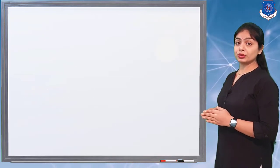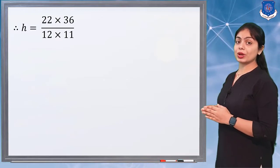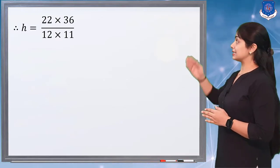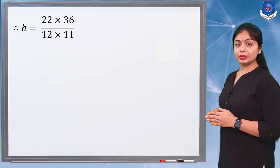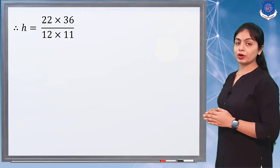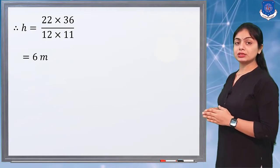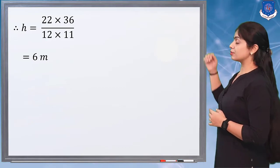We want the value of h, so we make h the subject: h = (22 × 36)/(12 × 11) = 6 m